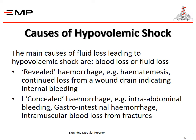The main causes of hypovolemic shock are blood loss or fluid loss, which may be in the form of revealed hemorrhage or concealed hemorrhage. Revealed hemorrhage, for example hematemesis, or continued loss from a wound drain indicating internal bleeding. Concealed hemorrhage, for example intra-abdominal bleeding, GI bleeding, or intramuscular blood loss from fractures.